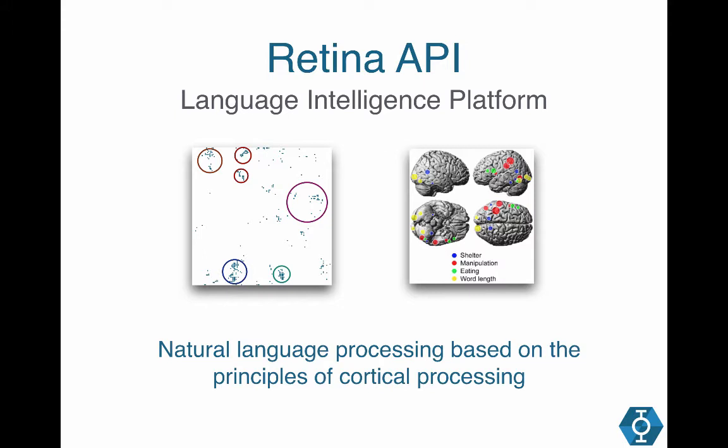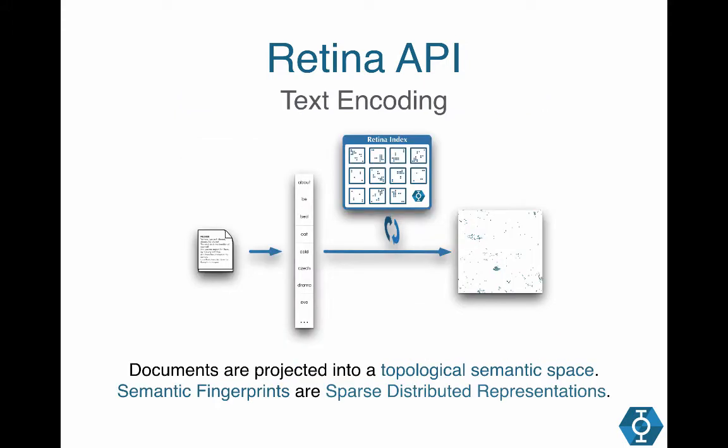On the left here you can see a graphical representation of how we store semantic information in a 128 by 128 matrix, with individual bits of the matrix representing a specific meaning, and with related pieces of information being stored close to each other, just like in the brain. We refer to these representations as semantic fingerprints, and they're a kind of sparse distributed representation, or SDR as some people call them.